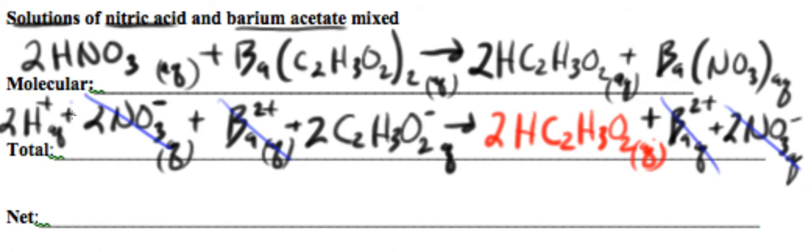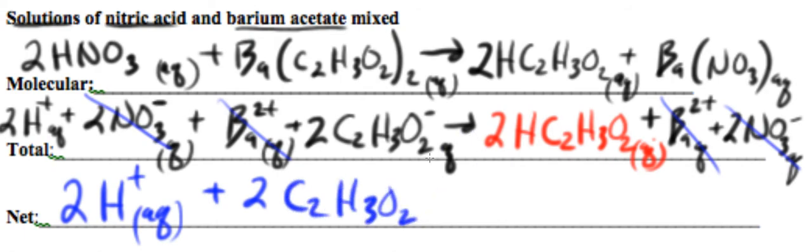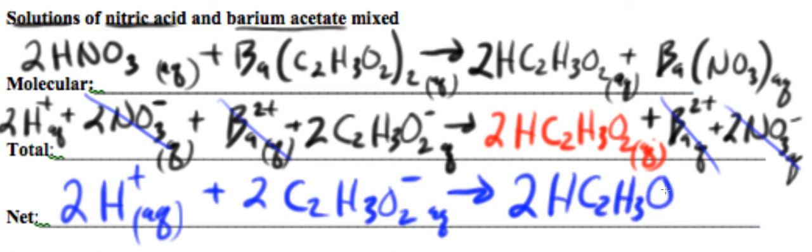So what we have for the net ionic equation—we're just going to drop down with everything that's not been cancelled out. And we're forming this weak acid, and that's what makes this a reaction in the first place. So this is how we write the net ionic equation when we're forming a weak acid.